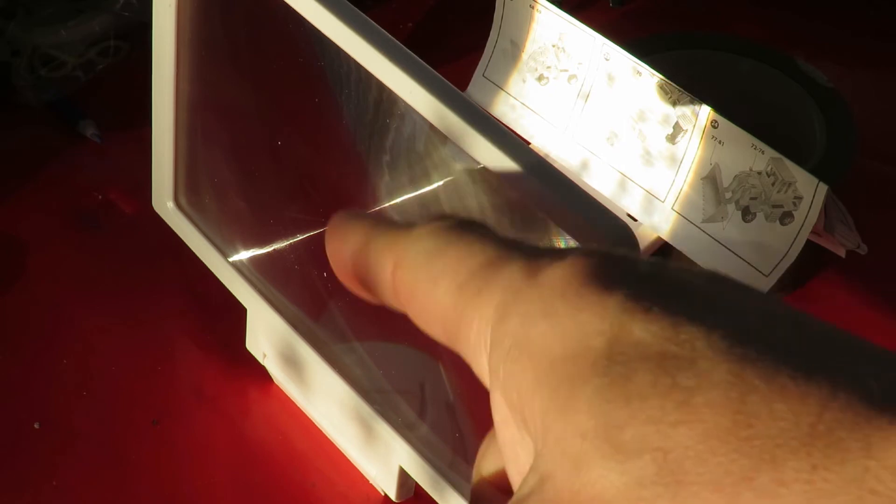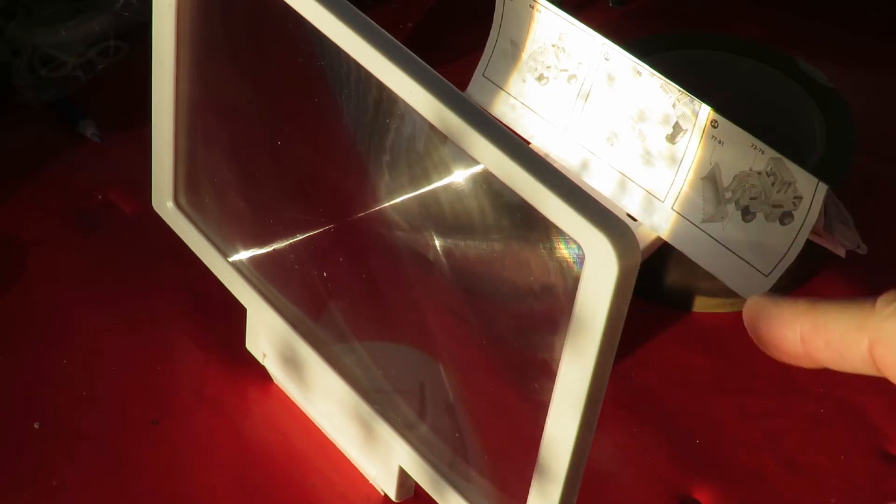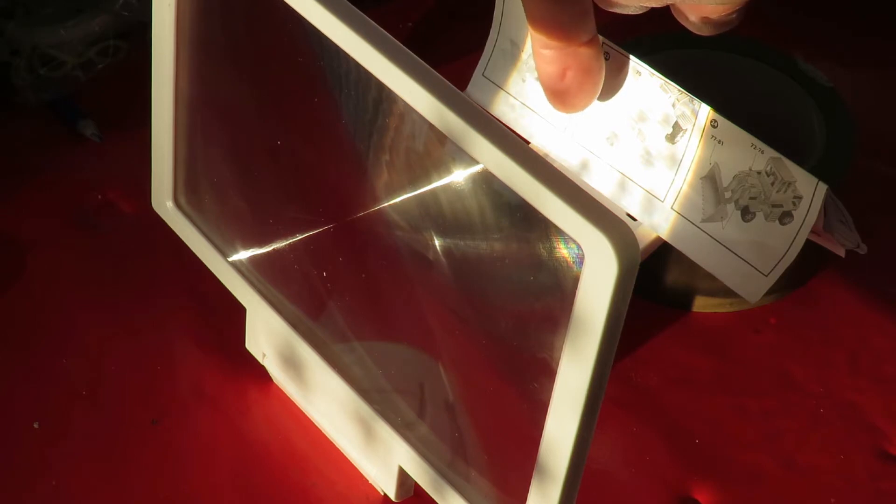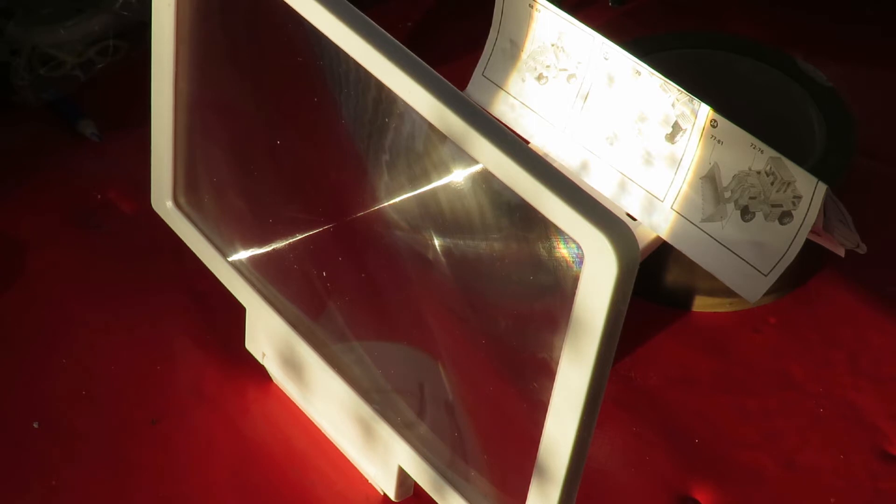So the screen is focusing the sun's rays, which is why we see the sun, the little white dot. But I just don't think we're getting enough sun to burn this through the window.